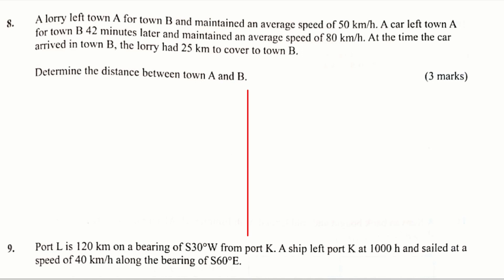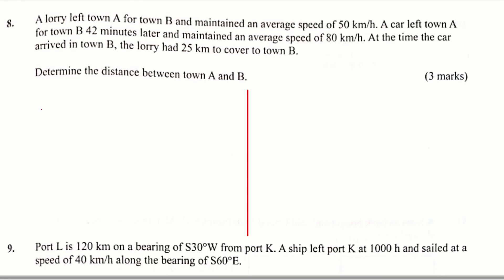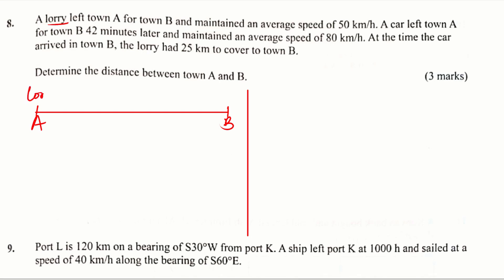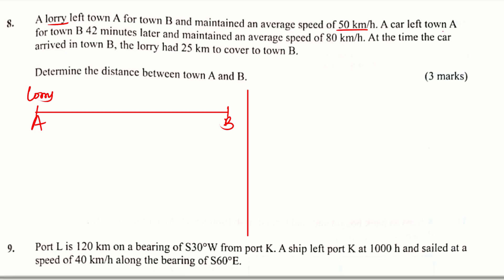So that is the question. To begin with, I will draw a line here that will help us to get the positions of A and B. Let town A be located here, then town B located there. The lorry was the first one to leave from A at 50 km per hour, then the car left town A 42 minutes later.